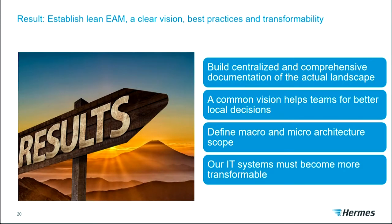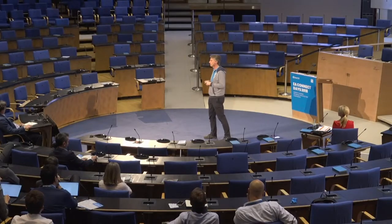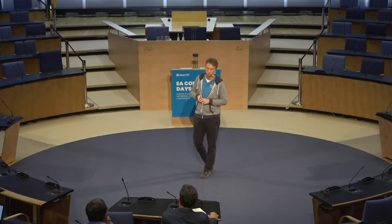To summarize the survey results: we needed centralized and comprehensive documentation for the actual landscape. We needed to build a common vision at a high level for better local decisions — we don't want to tell every team what to do for every technology and line of code. We should define macro and micro architecture. And our IT systems must become more adaptable, because changes in the logistics market will only increase.